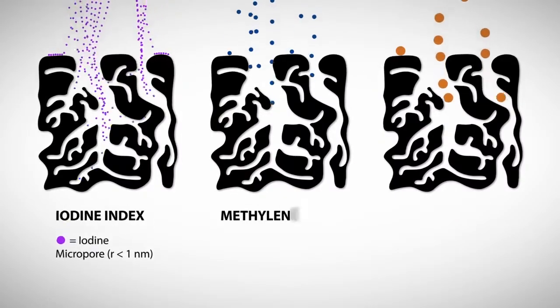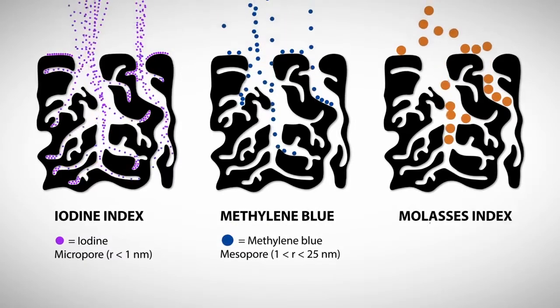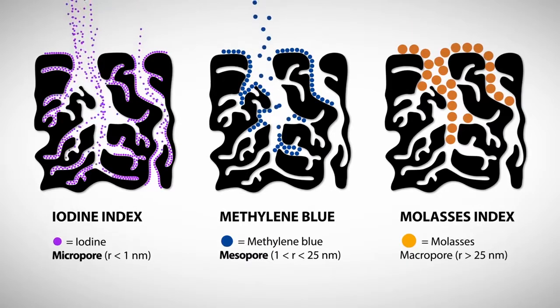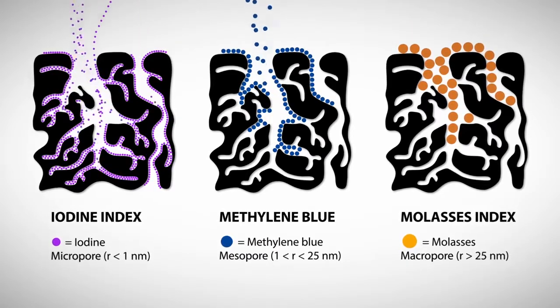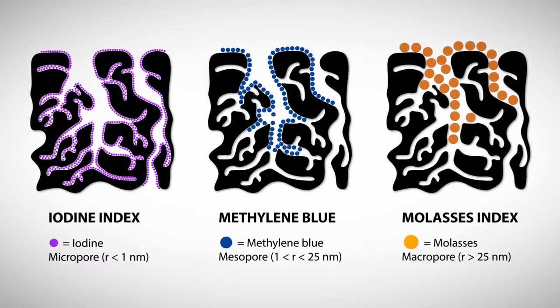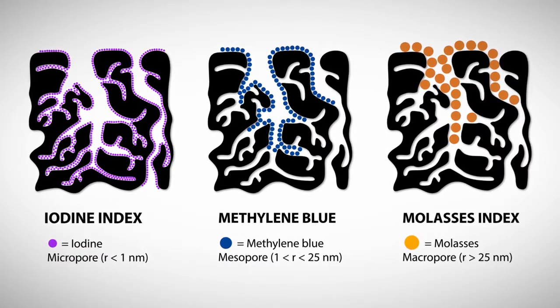The pore size distribution is amongst the most important characteristics of activated carbon. The ratio of micro, meso, and macro pores influences the kind of molecules being adsorbed and can be evaluated with standardized test methods using iodine, methylene blue, or molasses.